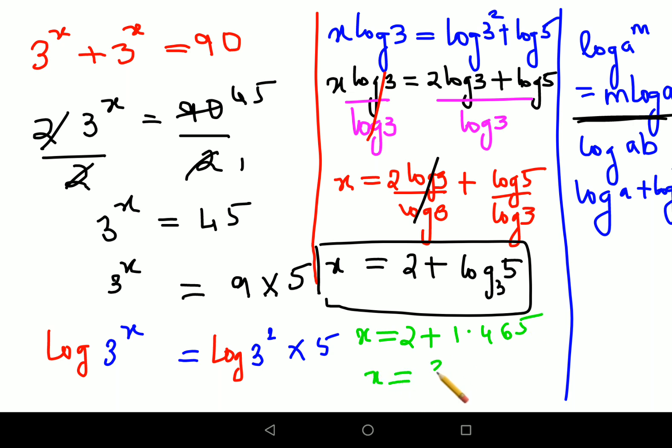Now students, I'm going to show you if the same question was asked and they had given you options. 3^x + 3^x = 90, and the options were given.